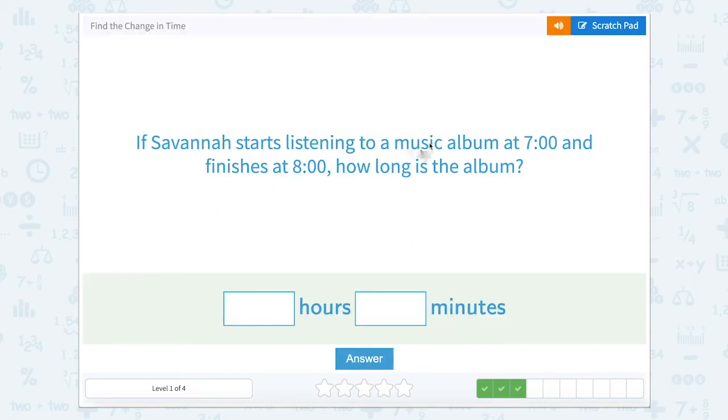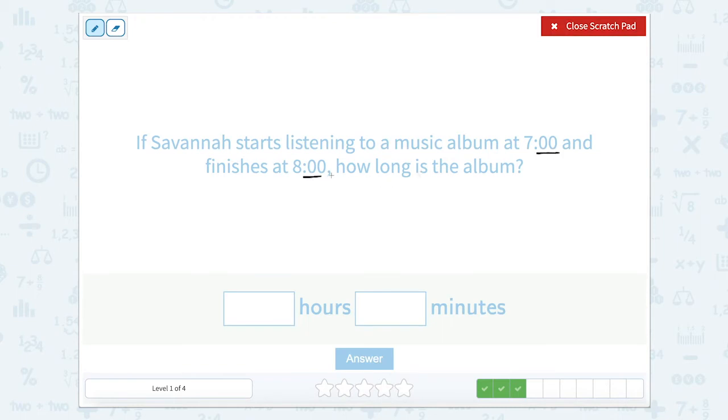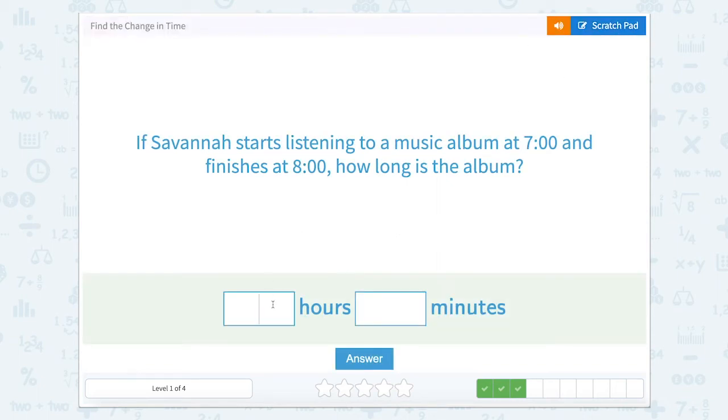If Savannah starts listening to a music album at seven and finishes at eight, how long is the album? Well, we can look here and we can look and see that our minutes go from zero minutes to zero minutes. So our minutes are not changing. So we really need to focus here on our hours. So we're going from seven to eight. So we have seven plus certain number of hours gets us to eight o'clock. So how many hours are in between seven and eight? That would just be one hour and zero minutes.